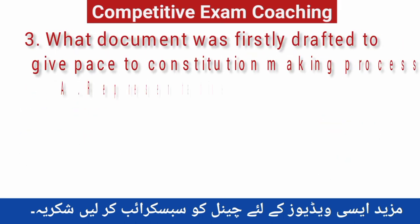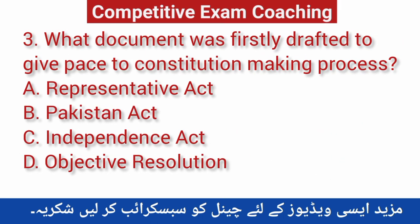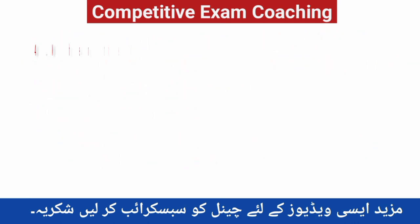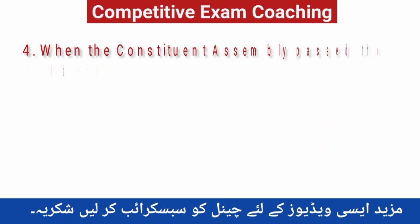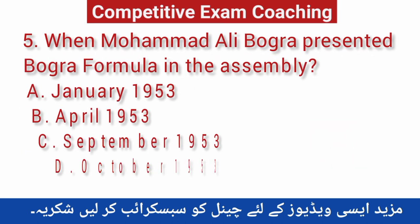Question number three: What document was firstly drafted to give pace to the constitution-making process? The correct answer is D — Objective Resolution. Question number four: When did the Constituent Assembly pass the Objective Resolution? Correct answer is B.